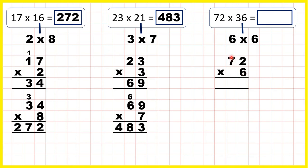2 times 6 is 12. So 1, 2. 7 times 6 is 42. Plus 1 is 43.